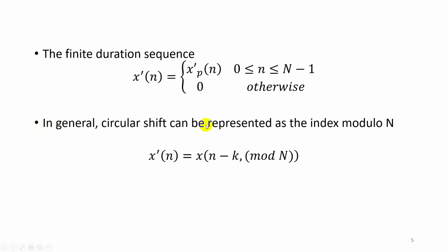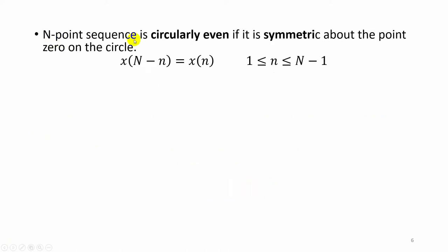Generally the circular shift can be represented as the index modulo N. x dash of n is equal to x of n shifted by k modulo N, which is also written as x dash of n equal to x of n minus k modulo N. The N-point sequence x of n is circularly even if it is symmetric about the point 0 on the circle — that is, if x of capital N minus n is equal to x of n.